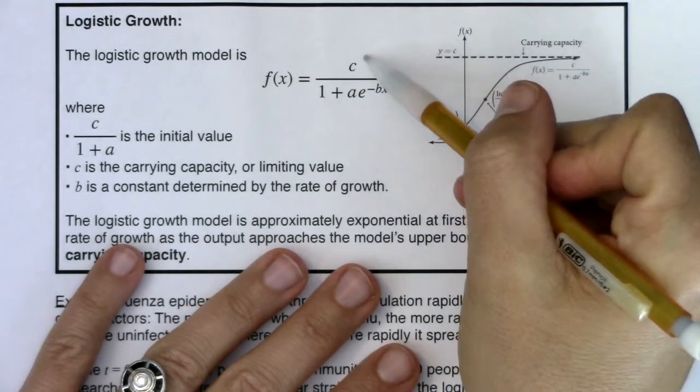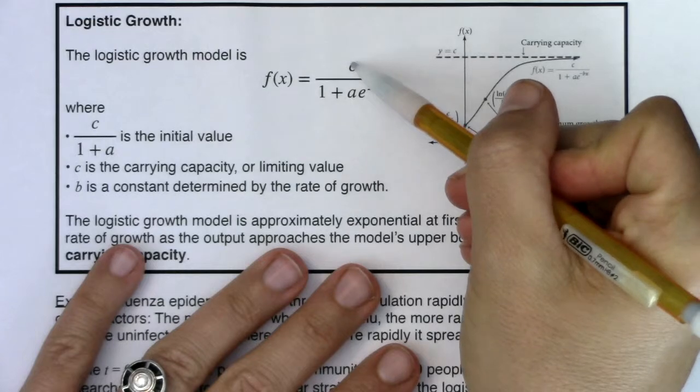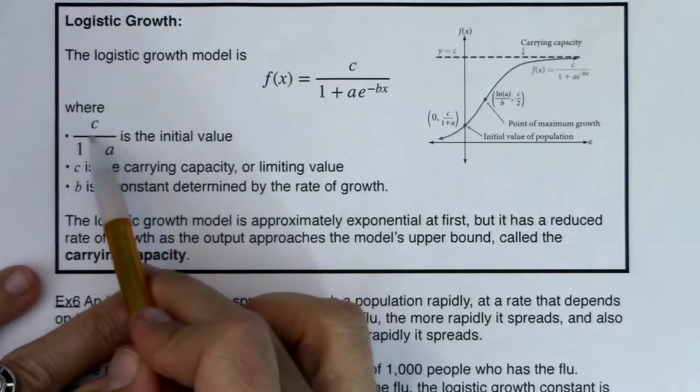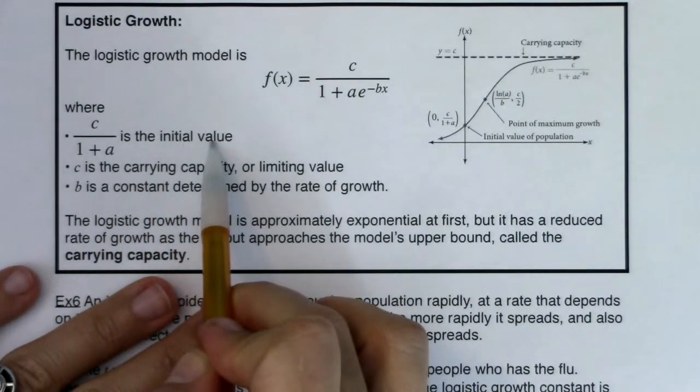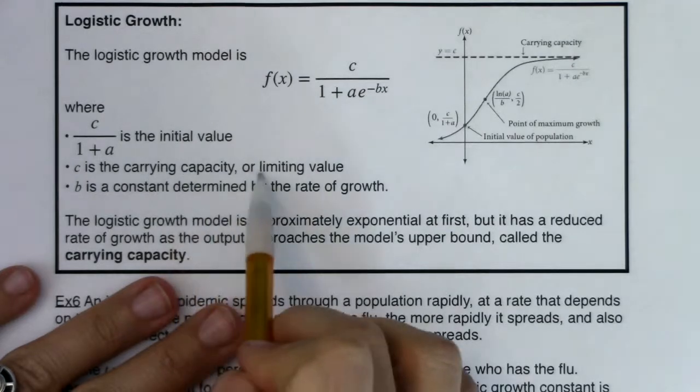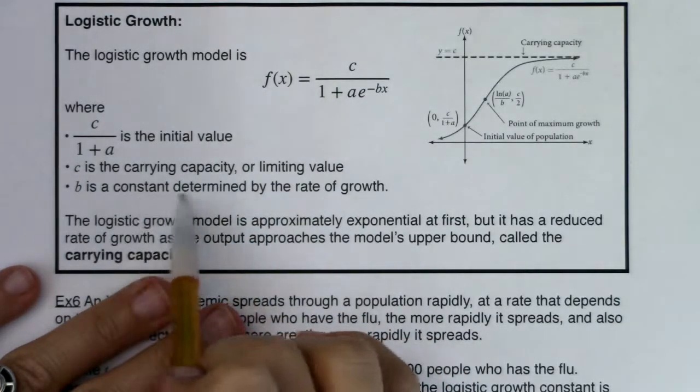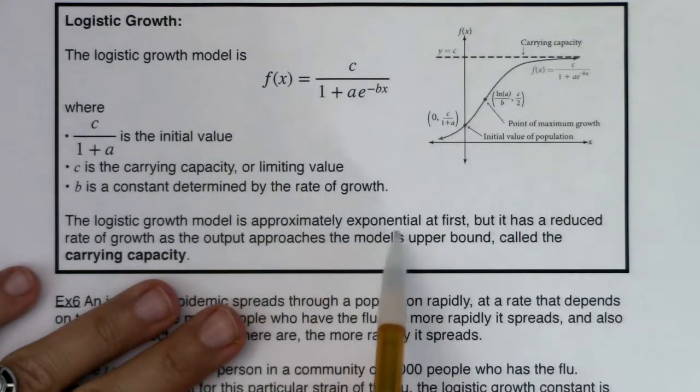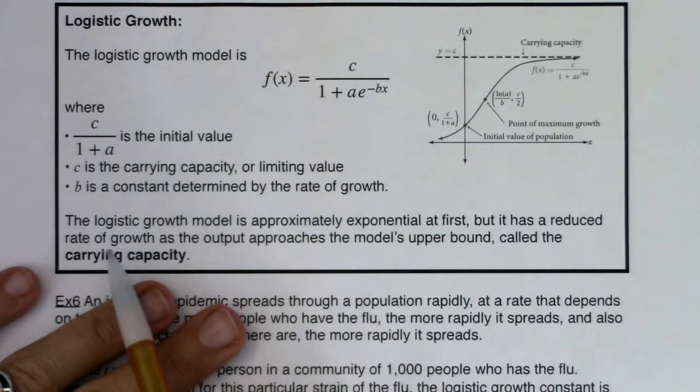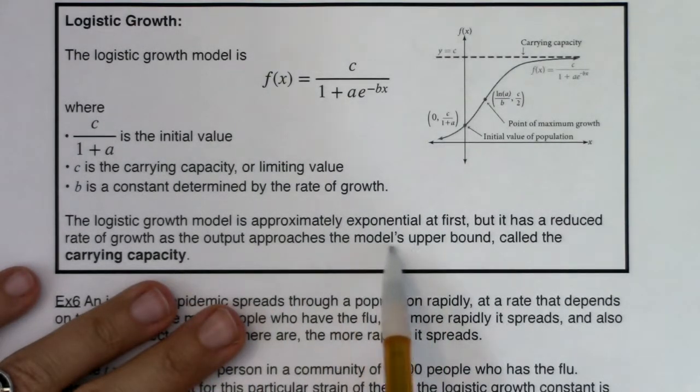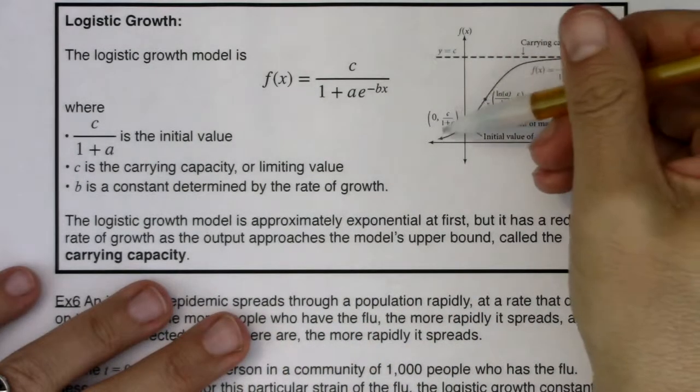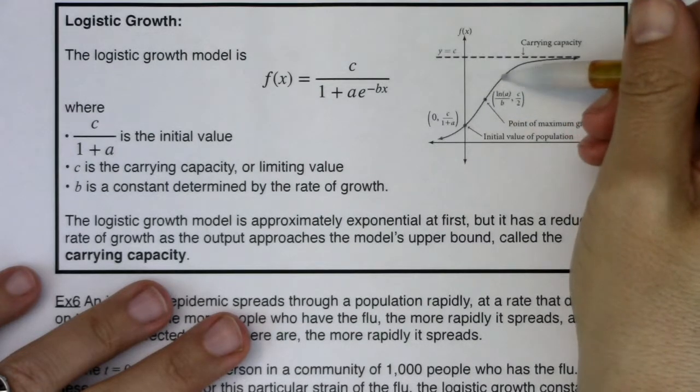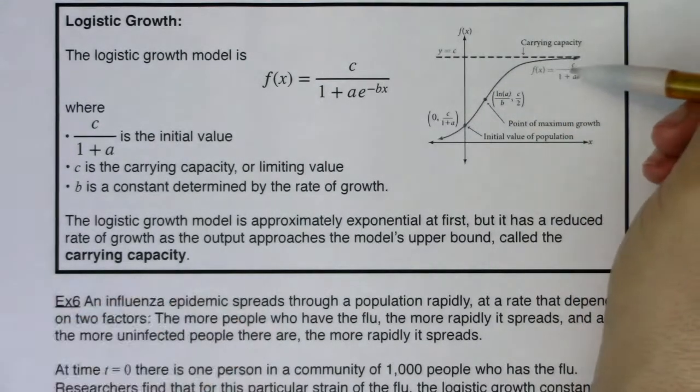And it's got this formula. So you can see it's got a bunch of new constants, we've got c, a and negative b, or a and b are familiar but we've got this c in here. So c in ratio to one plus a is your initial value. c is called the carrying capacity or it's some kind of limiting value. b is a constant determined by the rate of growth. The logistic growth model is approximately exponential at first but it has a reduced rate of growth as the output approaches the model's upper bound, which we call the carrying capacity. So initially you are growing super super fast like an exponential growth, but we do cap out at our carrying capacity.